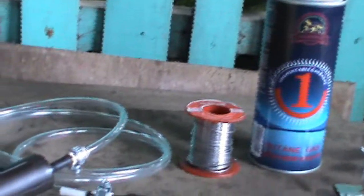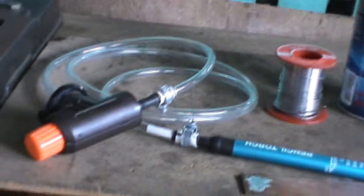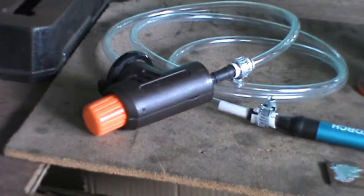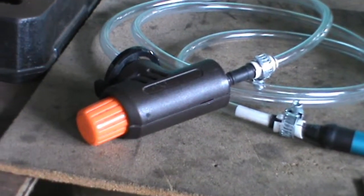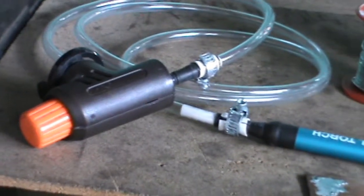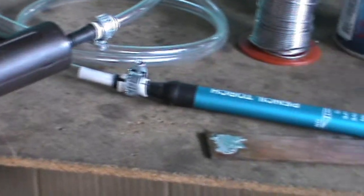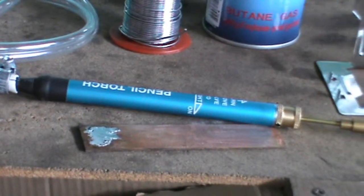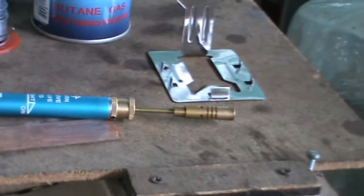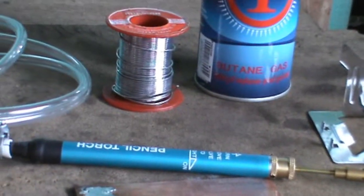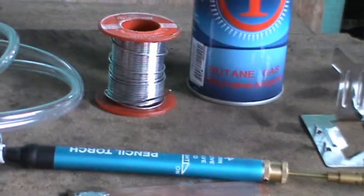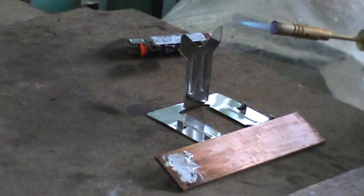So what we just need to do is test this. This part directly plugs to the butane cartridge - this is the pencil torch. So let's now test it. Let's try to melt some solder lid.